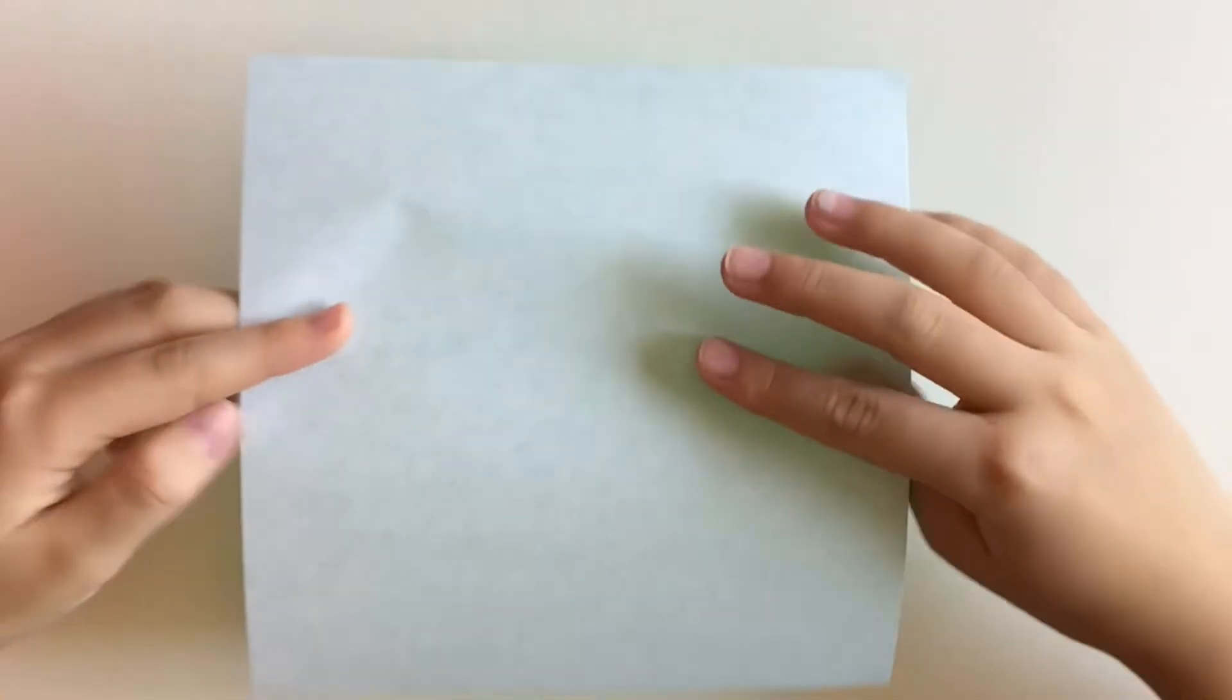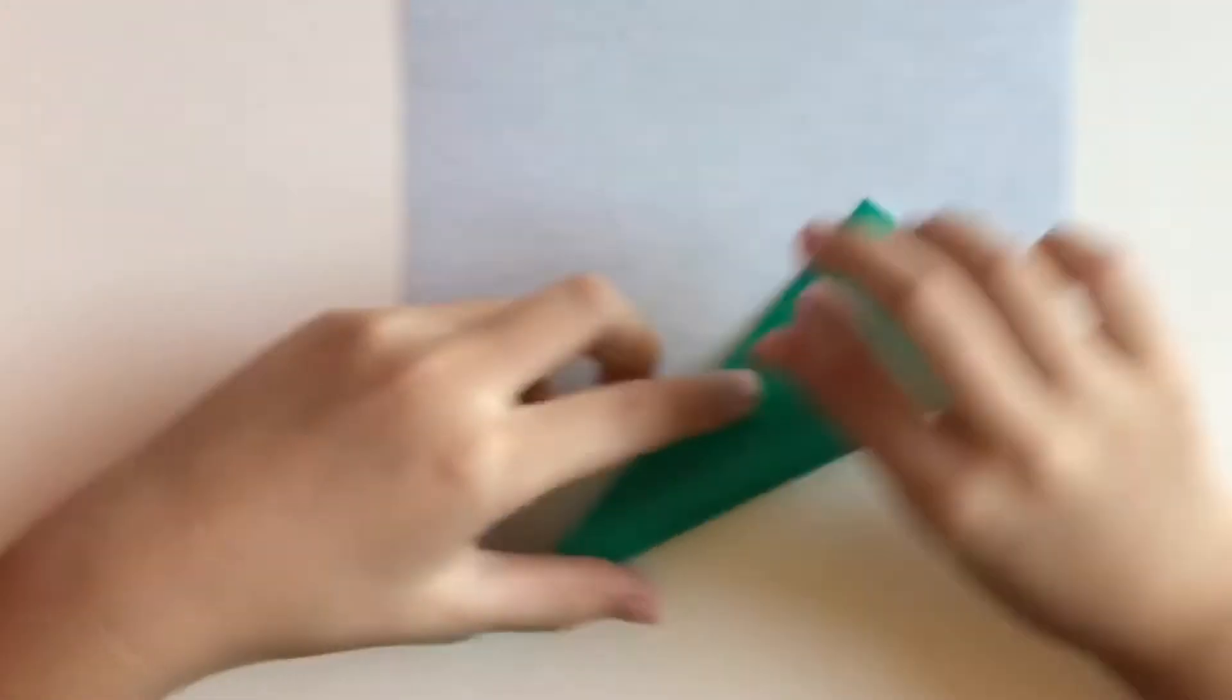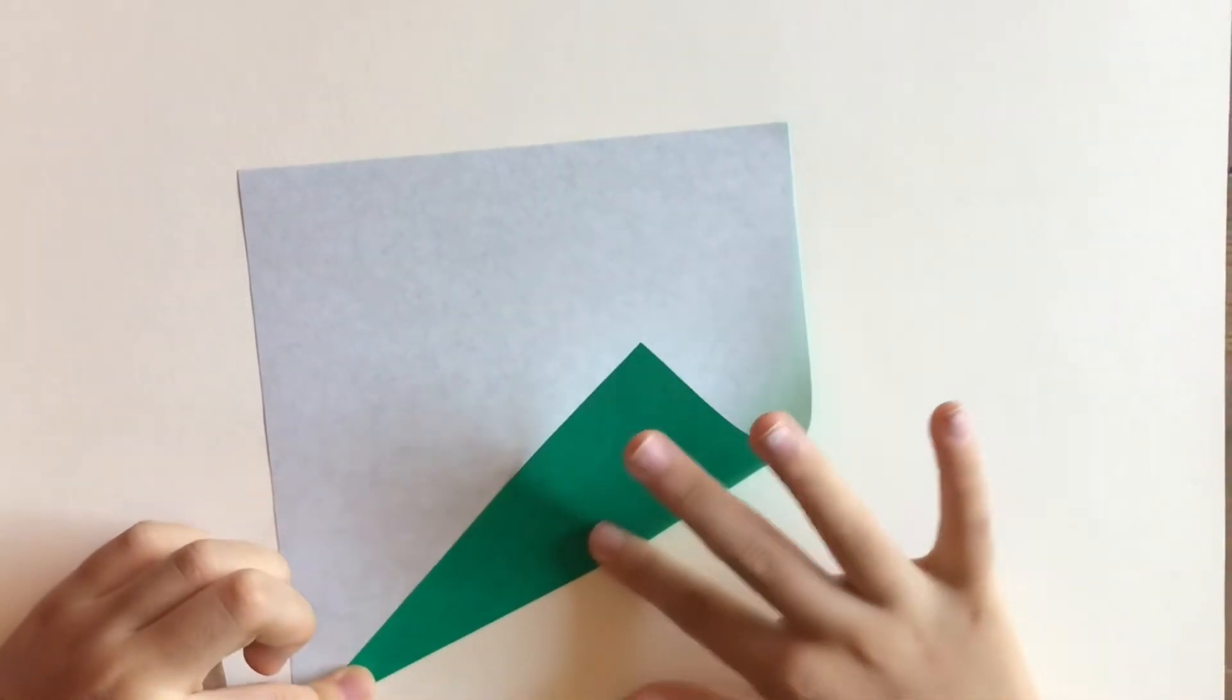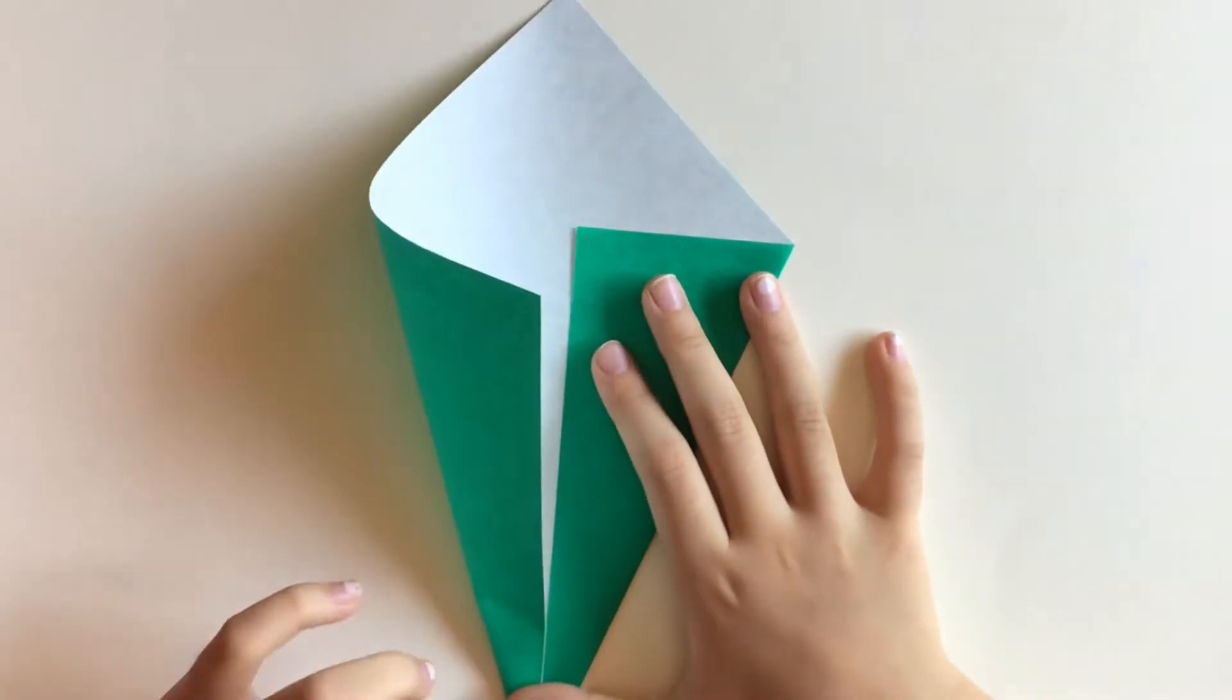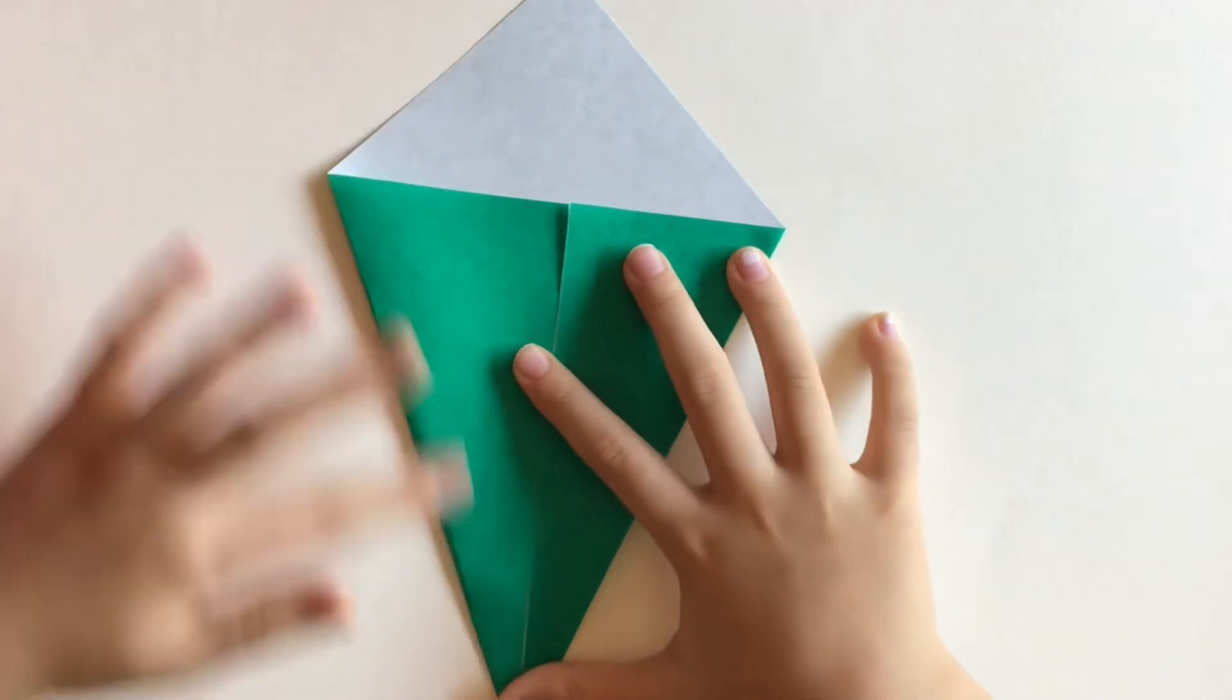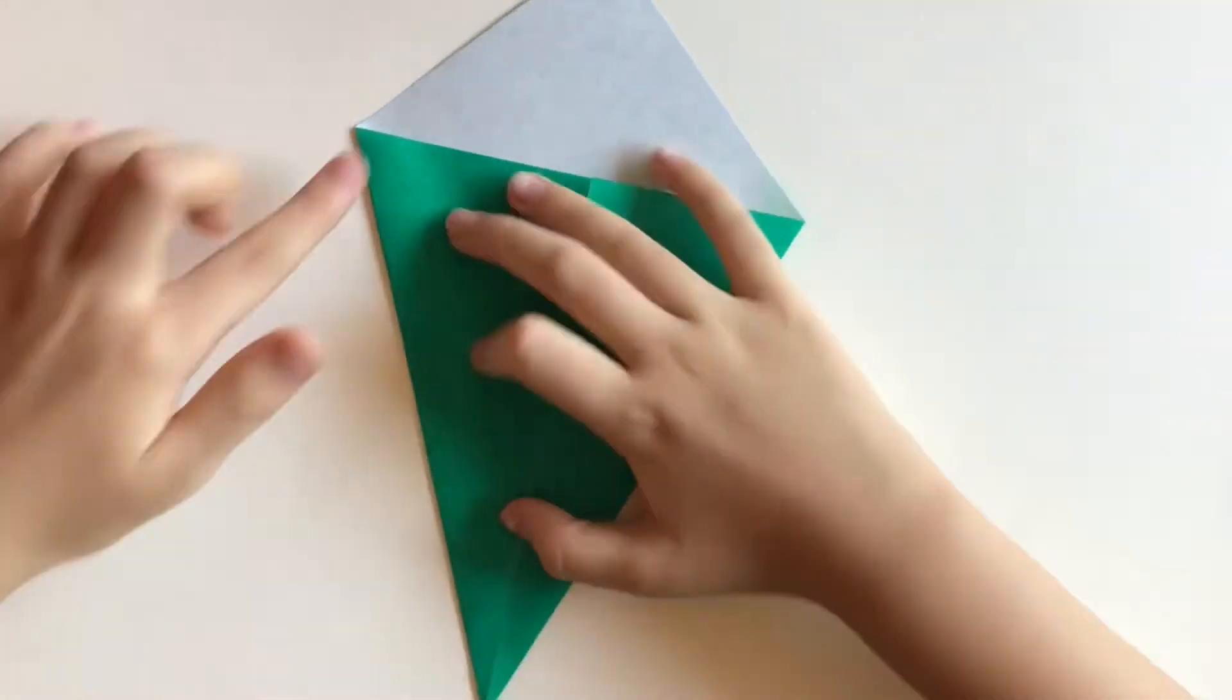First, get your origami paper and flip it to the blank side. Then, fold the two corners of the paper into the middle to create a kite shape. Remember to crease the edges so the paper won't unfold.